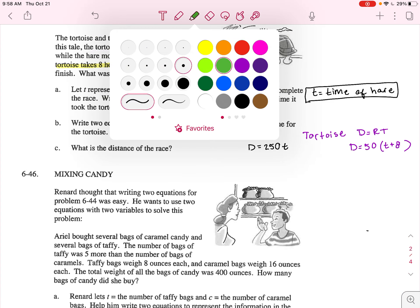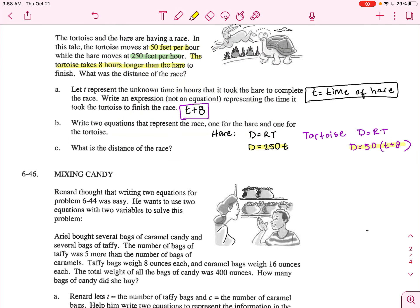Now we have two equations with only two unknowns and they're both in D equals format. So let's set them equal to each other. So let's do 250T equals 50 times T plus eight.